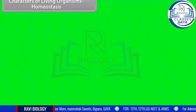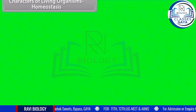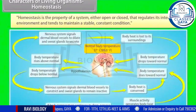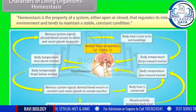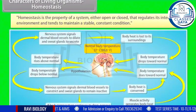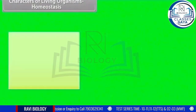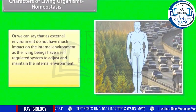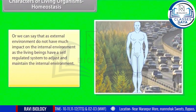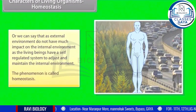Characters of living organisms — Homeostasis: homeostasis is the property of a system, either open or closed, that regulates its internal environment and tends to maintain a stable, constant condition. In other words, the external environment does not have much impact on the internal environment, as living beings have a self-regulated system to adjust and maintain the internal environment. This phenomenon is called homeostasis.